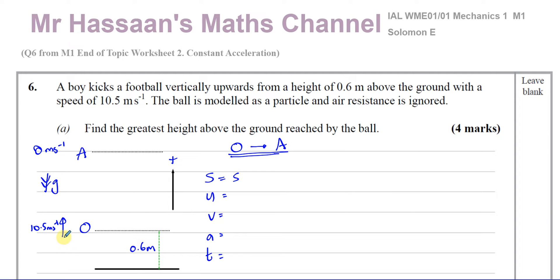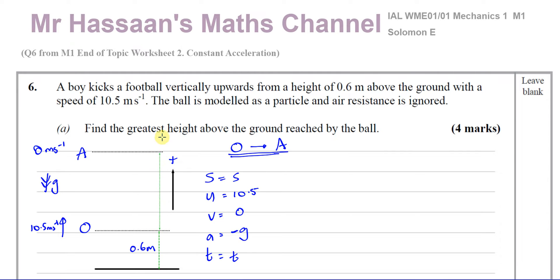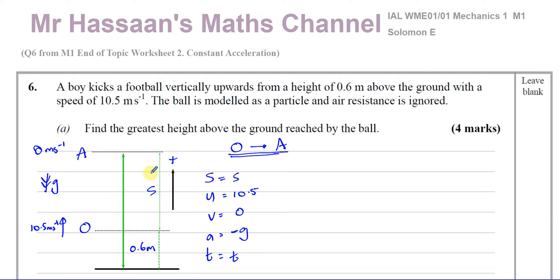U is 10.5 meters per second upwards, so U = 10.5. V is zero because it comes to instantaneous rest at A. A is negative G — negative 9.8 for Edexcel, or negative 10 for Cambridge. We don't need time T. S is the displacement between O and A. We need to find S — then our final answer will be the height above the ground, which is S plus 0.6.